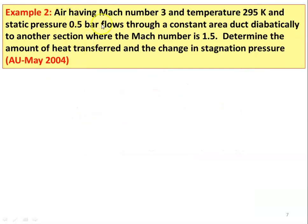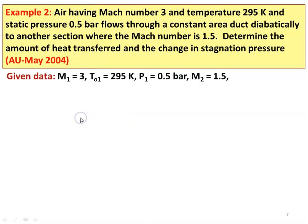Example number 2: Air having Mach number 3, temperature 295 Kelvin, and static pressure 0.5 bar flows through a constant area duct adiabatically to another section where the Mach number is 1.5. Determine the amount of heat transfer and the change in stagnation pressure. Given: M1=3, T1=295 K, P1=0.5 bar, M2=1.5.